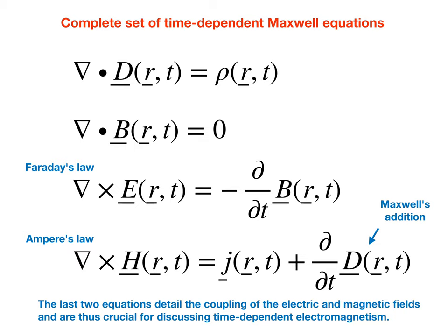Of particular importance in understanding time-dependent electromagnetic phenomena is the coupling between electric and magnetic fields inherent to the last two equations. Reading Faraday's law, one can see that a time-differential of the magnetic field, taking the negative, gives a rotational electric field. Similarly, looking at Ampere's law, the last of the four equations, Maxwell's addition — the time-differential of the electric field — gives a rotational magnetic field H. These last two equations detail the coupling of the electric and magnetic fields, and they are crucial for discussing time-dependent electromagnetism.